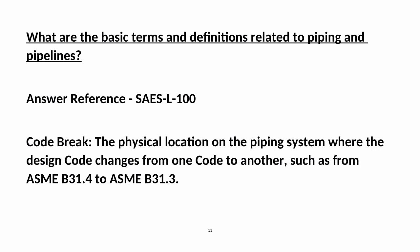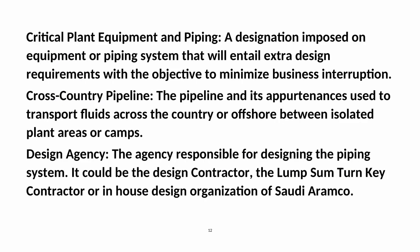What are the basic terms and definitions related to piping and pipelines? Answer Reference: SAES L100. Code Break: The physical location on the piping system where the design code changes from one code to another, such as from ASME B31.4 to ASME B31.3. Critical Plant Equipment and Piping: A designation imposed on equipment or piping systems that will entail extra design requirements with the objective to minimize business interruption.